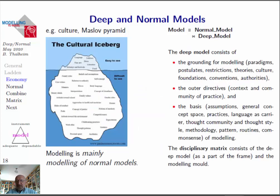This can be visualized by an iceberg — I have been using here the cultural iceberg. Modeling is mainly consisting of modeling the normal model, that means the upper part of the iceberg. The lower part of the iceberg is however not really considered. Our deep model is this lower part of the iceberg. And we use additionally some kind of disciplinary matrix that consists of the deep model and the modeling mold. But this will be only at the end of this lecture.